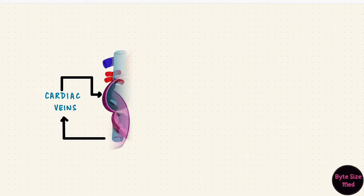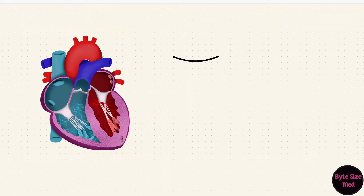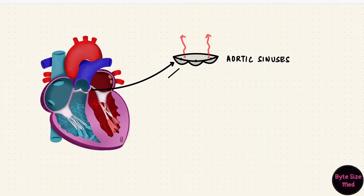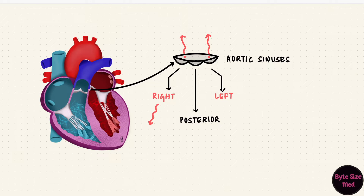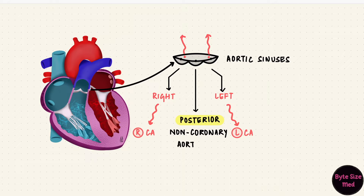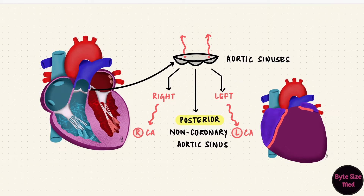First let's look at the coronary arteries. There are two coronary arteries that emerge from swellings called the aortic sinuses near the aortic valve. There are actually three sinuses: right, left, and posterior. The right coronary artery comes from the right aortic sinus and the left coronary artery from the left aortic sinus. The posterior one doesn't have a coronary artery, so it's also called the non-coronary aortic sinus.